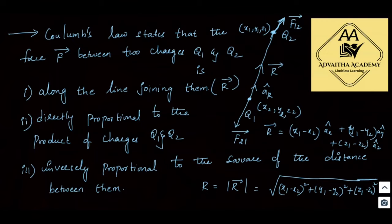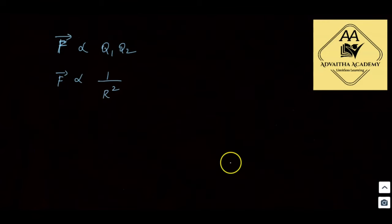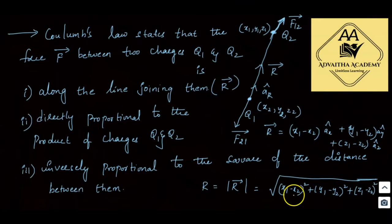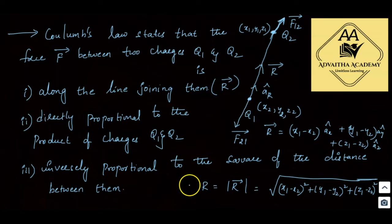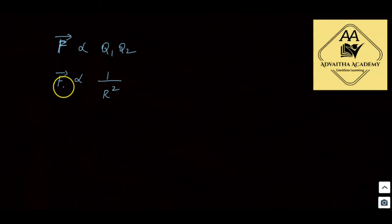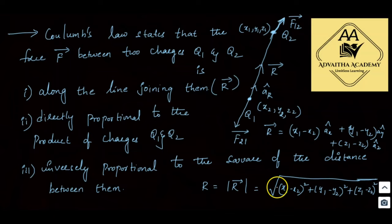Here r (small r) is the distance between those two points at which the two charges exist. F is directly proportional to q1·q2, and inversely proportional to r². Combining both: F ∝ q1·q2 / r². We introduce the proportionality constant k, giving F = k·q1·q2 / r².